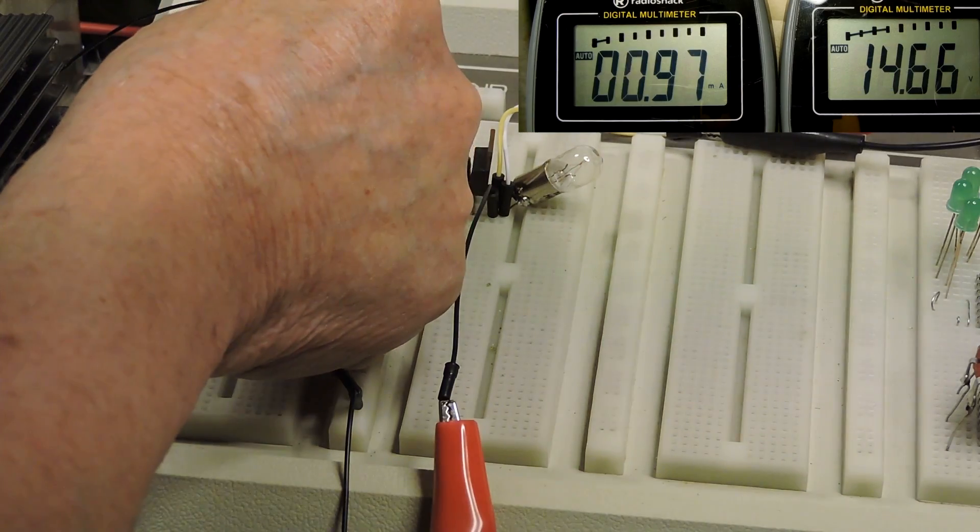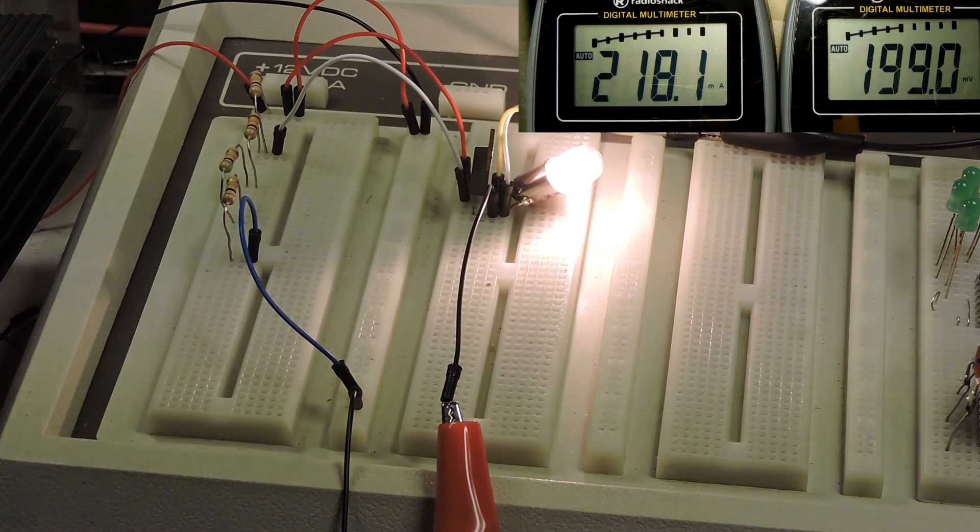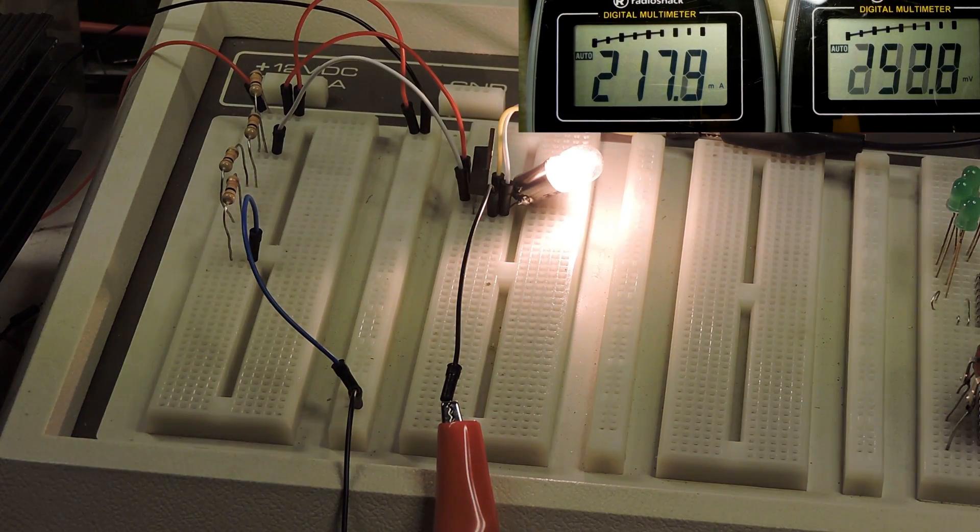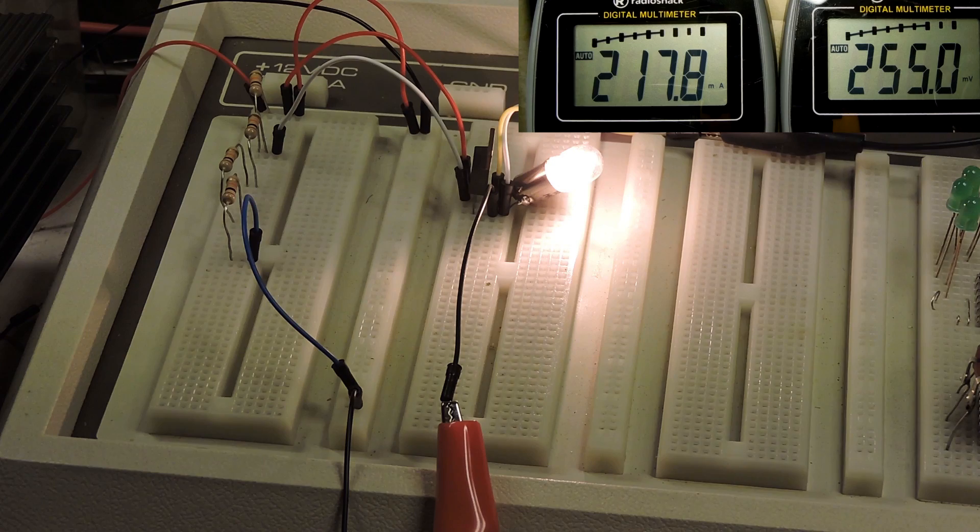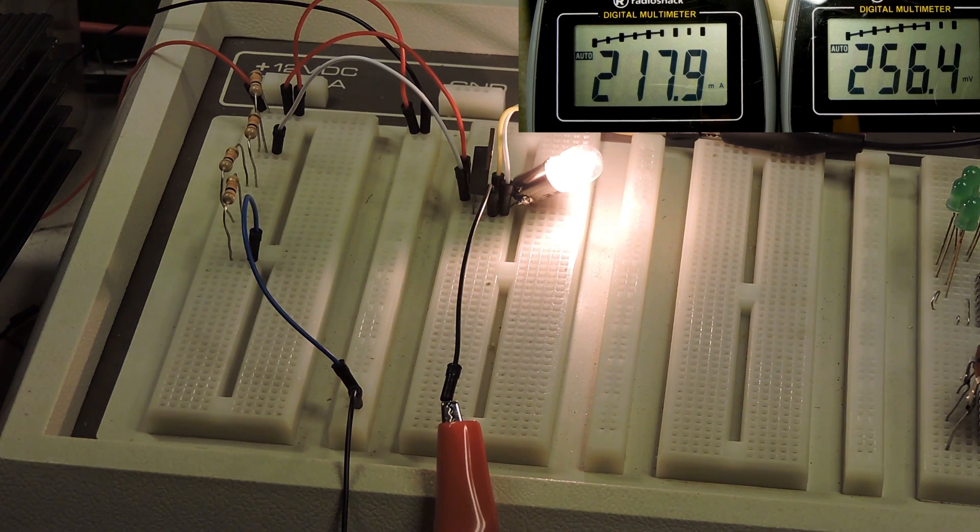Okay now back to change the bias to the highest and now the bulb is very bright so that means that the transistor's resistance is even lower.